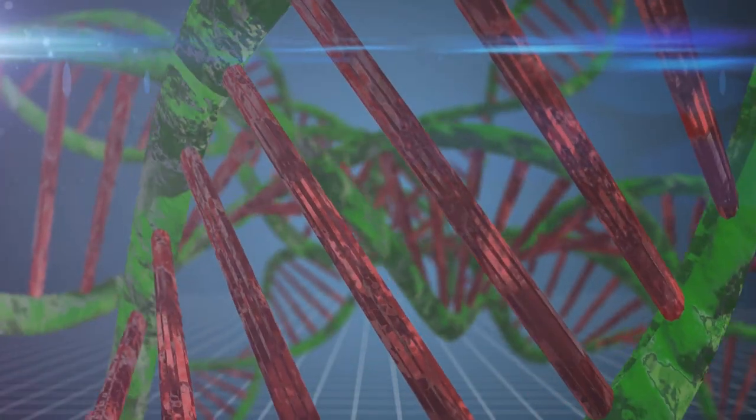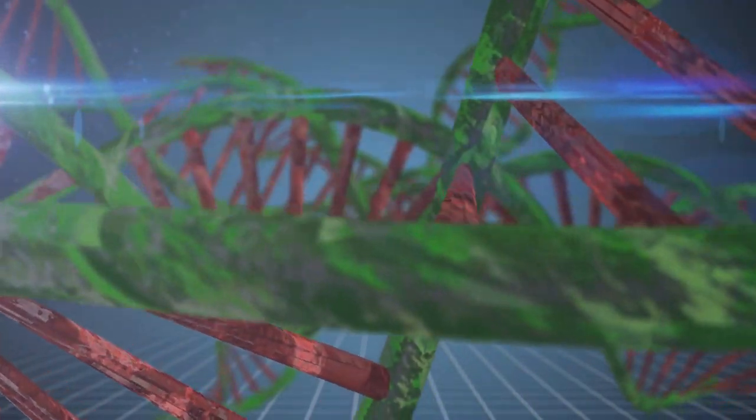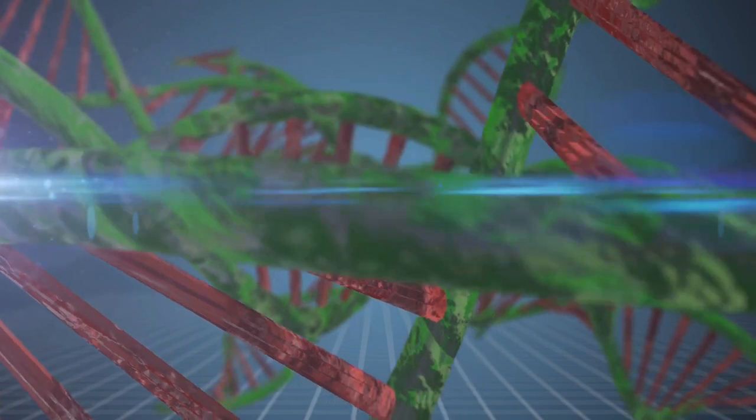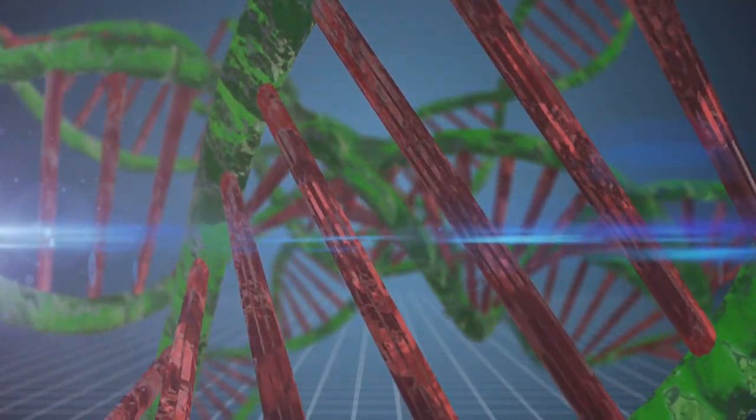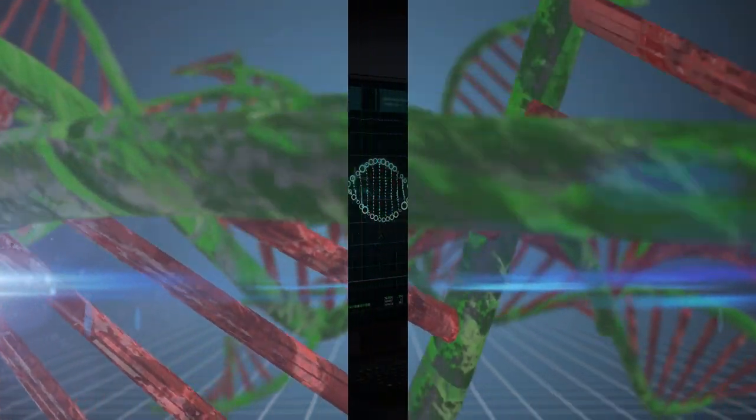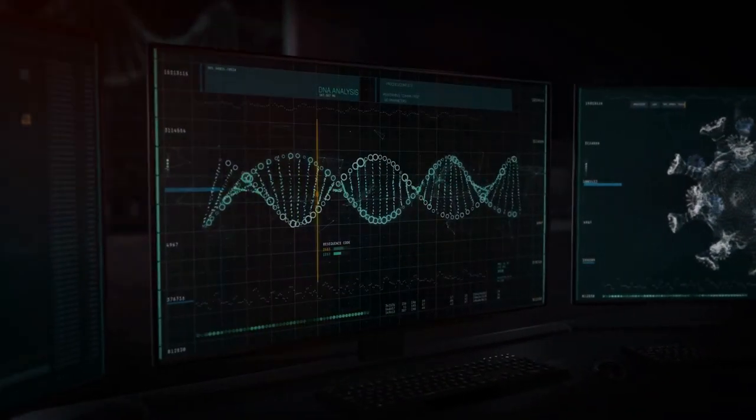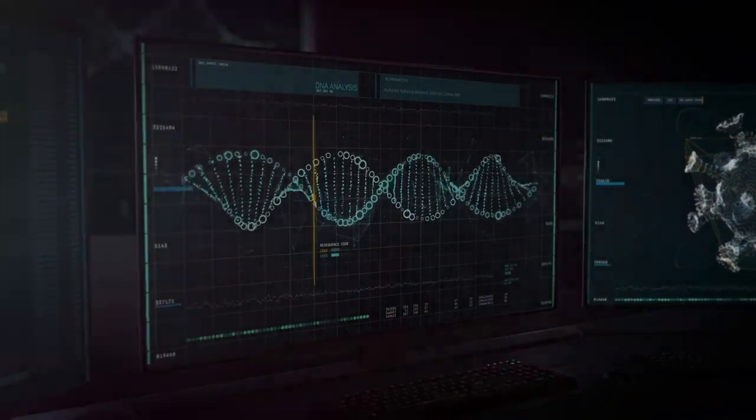To state the obvious, this finding of radically different and species-specific alternative splicing patterns is simply completely devastating to the gene-centric presuppositions of Darwinian evolution. In short, the non-protein coding regions between even the chimp and human genomes are species-specific and strikingly different.